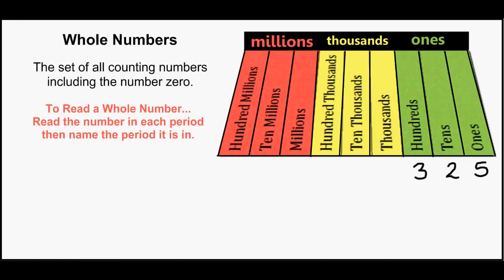If we were to write a larger number, we could put some digits in the thousands period. This number would be read 41,325.